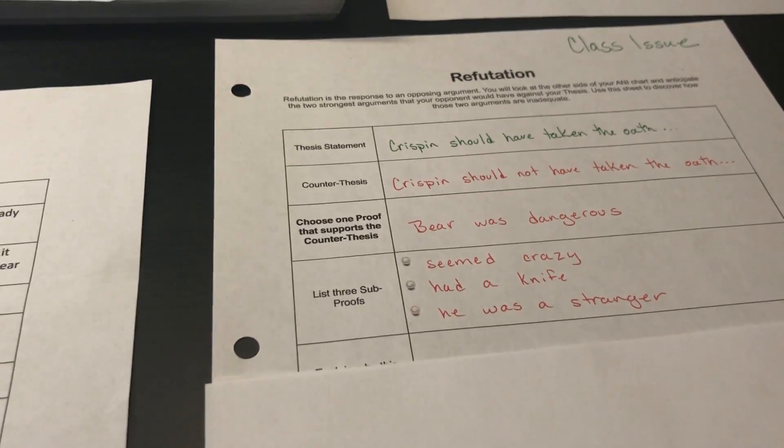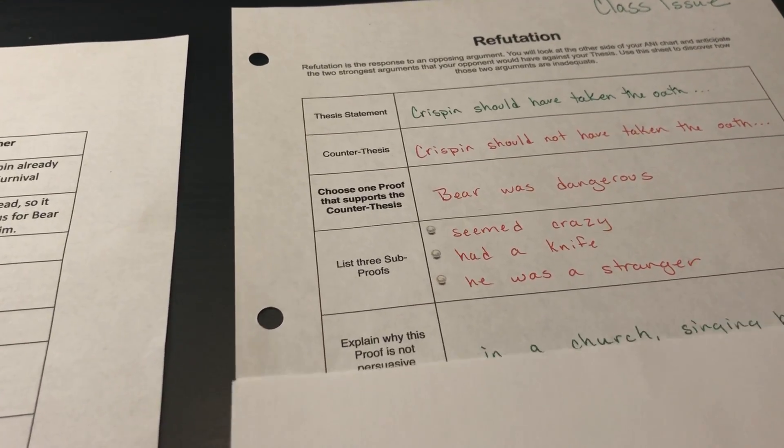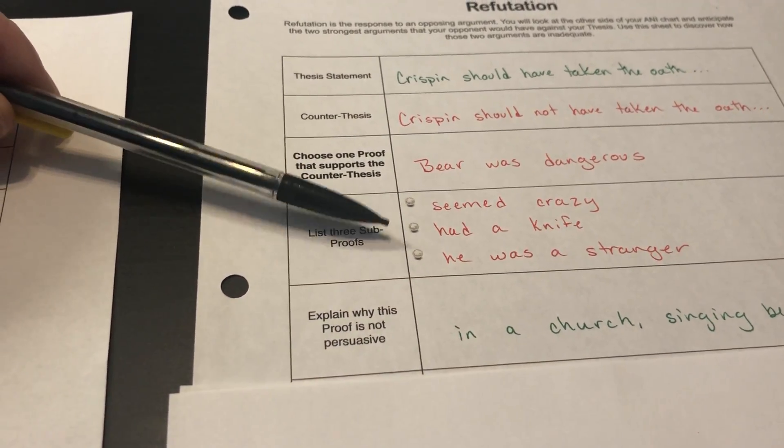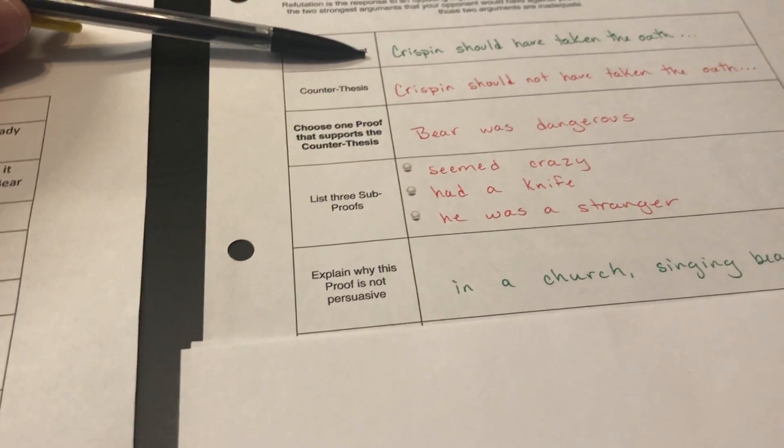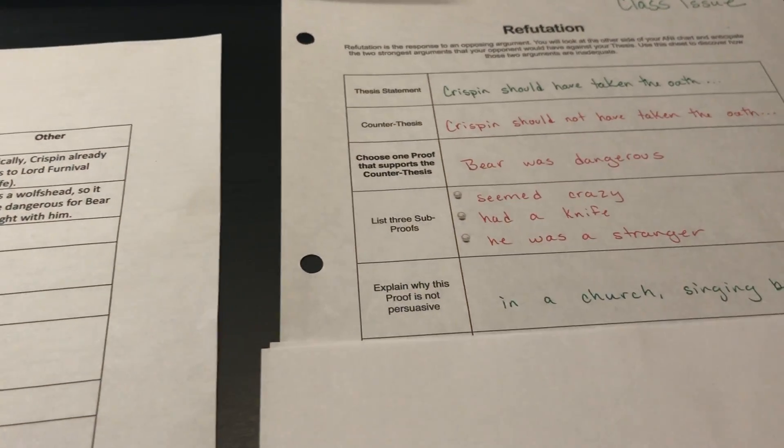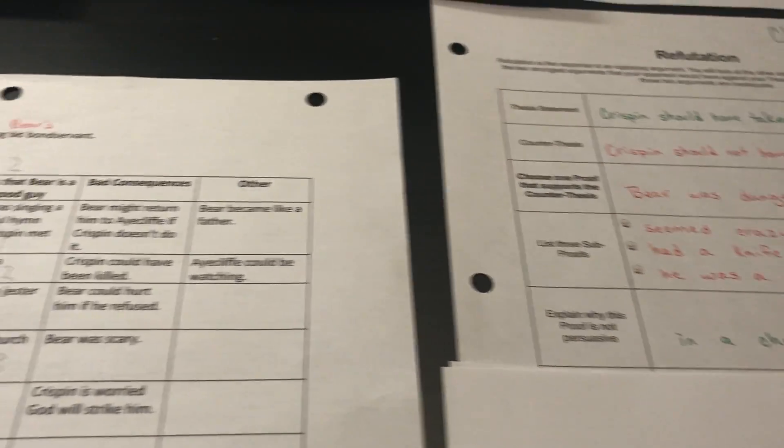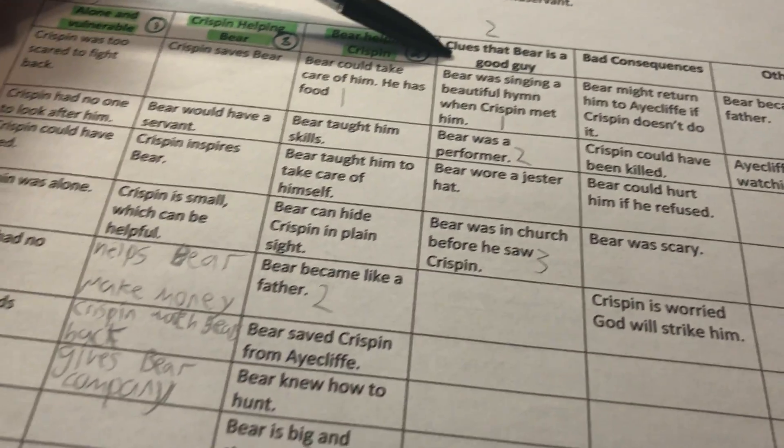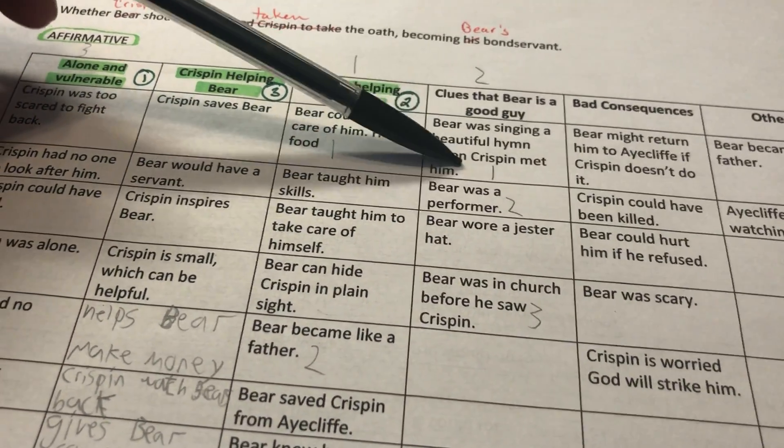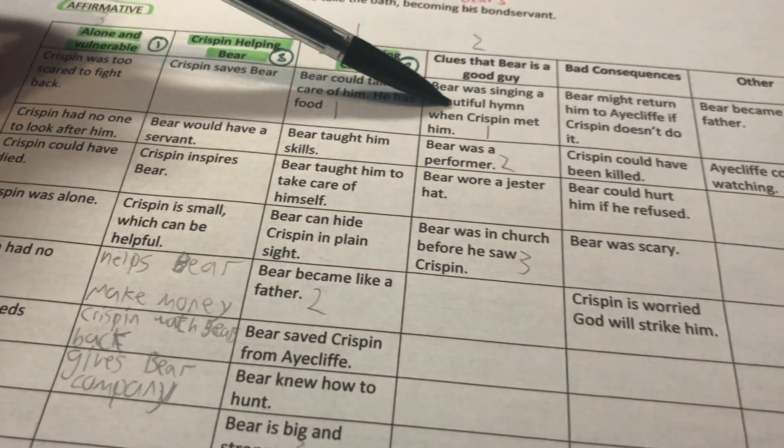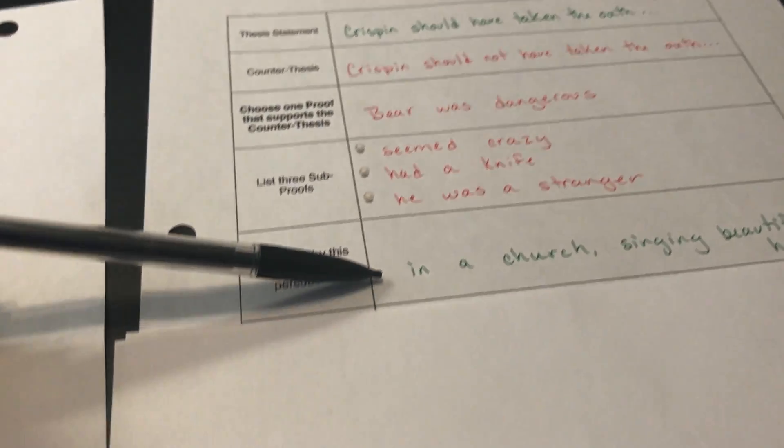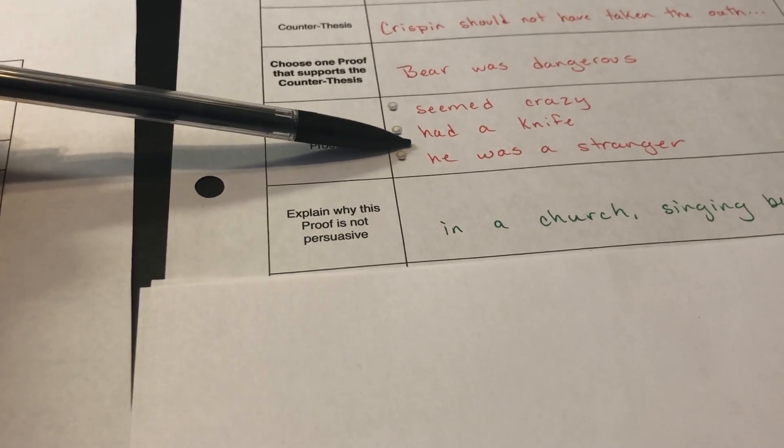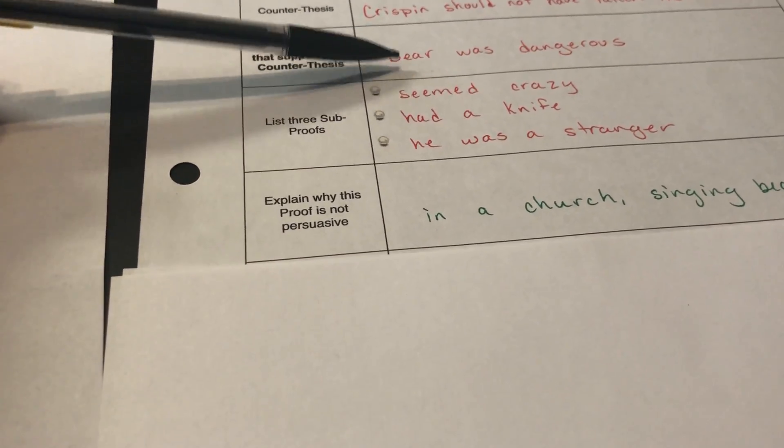After thinking about that and talking about that, we need to explain why these reasons here are not sufficient enough for us to change our mind on our original thesis. So, believe it or not, if you go back to our Annie chart, we had all of this information here. One of our categories was that clues that Bear's actually a good guy. So we had this stuff down here. We ended up pulling from here. We already had all of this ready to go. So this is what we ended up using for our counter to those who disagree with us, those who say that Crispin should not take the oath because Bear is dangerous.